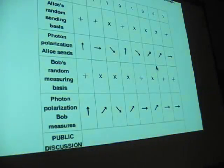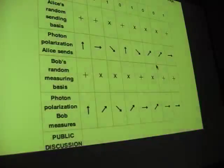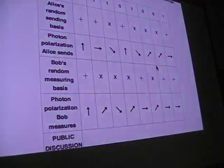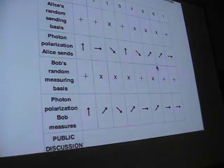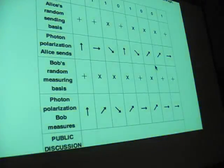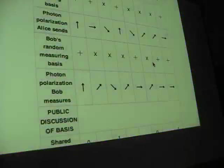And then he tells, he sends Alice back, this is what I used to read all this. Alice says, and you can do this over an open channel, Alice says, well, no, this one's wrong, this one's wrong. The ones that you didn't choose, the ones that you chose wrong, are wrong.